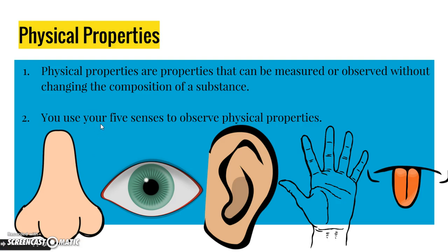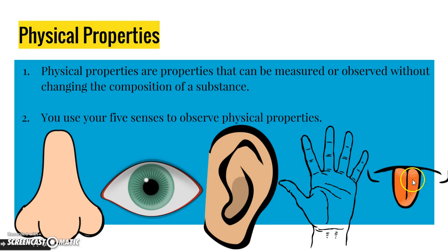Physical properties. Physical properties are properties that can be measured or observed without changing the composition of a substance. You already know that you use your five senses to observe physical properties — smell, sight, hearing, touch, or sometimes taste.